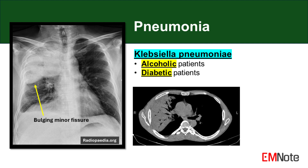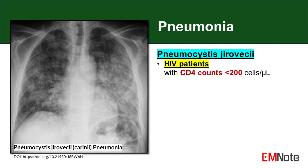The increased risk in alcoholic and diabetic populations is attributed to impaired immune function, particularly neutrophil dysfunction and alterations in the normal respiratory flora.